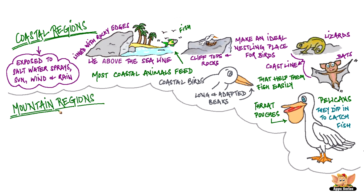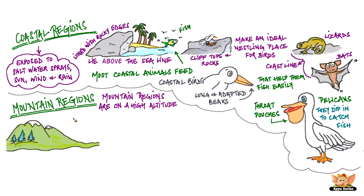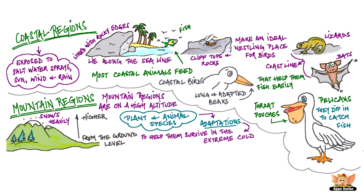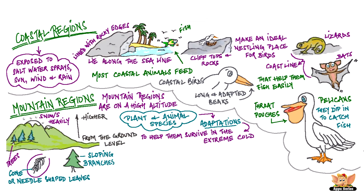Mountain regions are at a high altitude, which means that they are higher from the ground level. Therefore, they are windier and much colder than plains, and it also snows heavily in the mountains. A vast variety of plant and animal species living in the mountains have developed adaptations to help them survive in the extreme cold and snow. Have you observed the trees growing in the mountains? They have cone or needle shaped leaves and sloping branches. These help the rain and snow to slide off easily.